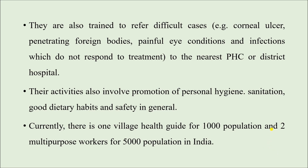Currently India has two multi-purpose workers for 5,000 population and one village health guide for 1,000 population providing services at the grassroot level. These workers are hugely burdened, so there is a need to increase the number of village health guides, multi-purpose workers, ASHAs, and ANMs. Health workers are given topical tetracycline for trachoma, vitamin A capsules or syrup for children, and eye bandages and shields. They are also trained to refer difficult cases such as corneal ulcer, penetrating foreign bodies, and painful eye infections.